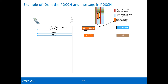The mobile then starts listening to the system information broadcast messages, which are present in the PDSCH. The identity used is the SI-RNTI. The mobile starts trying to listen to the SI-RNTI to find out where these system information elements are.